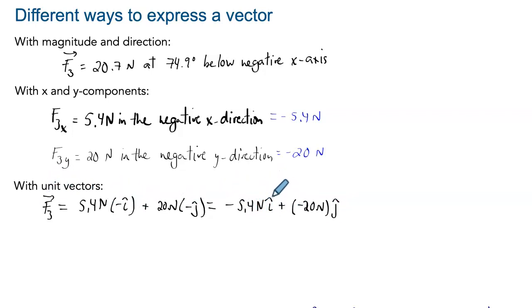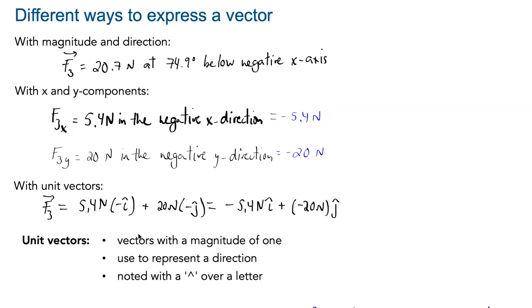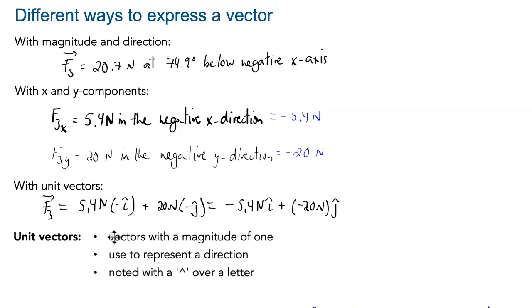The i hat just replaces in the direction of x, and the j hat is just in the direction of y. So unit vectors, what they are, for us, it will be super simple. They are always vectors with magnitude of 1, and they are used to represent just a direction. We note them with a carrot over a letter.